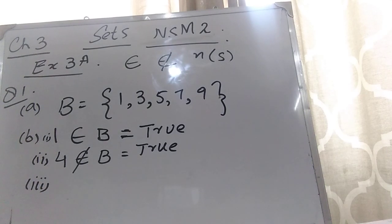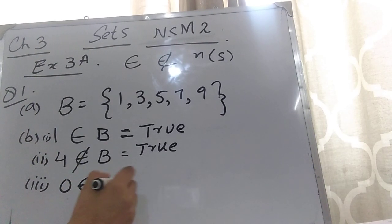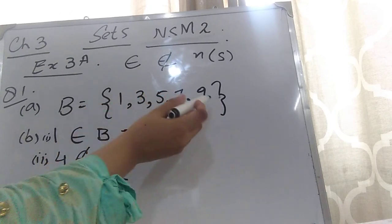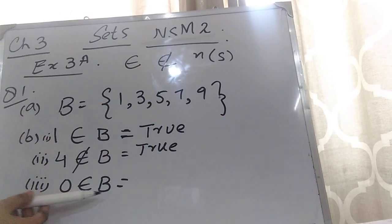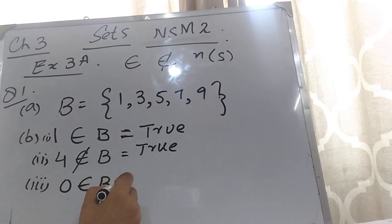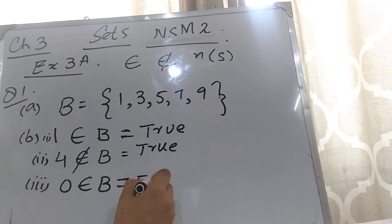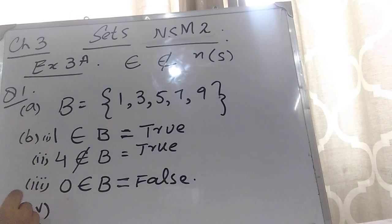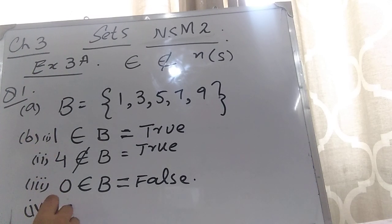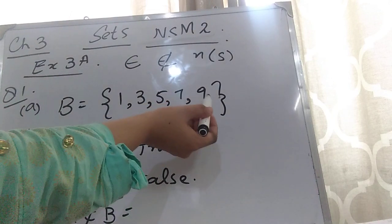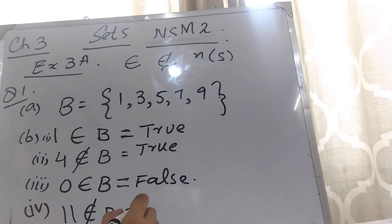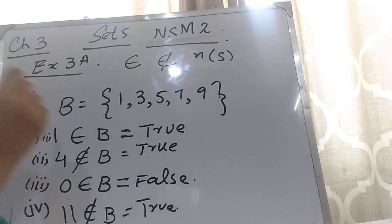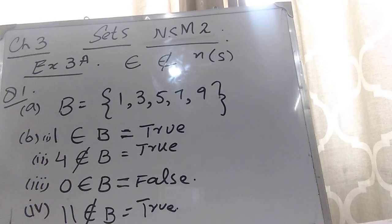In part 3 they are saying that 0 is an element of B. But 0 is not an element of B, so this statement is false. In part 4 they are saying that 11 is not an element of B. Here you can see that 11 is not present in this set, so it is not an element of B, and this statement is also true. I hope question number 1 is clear to you.